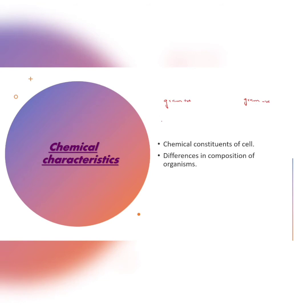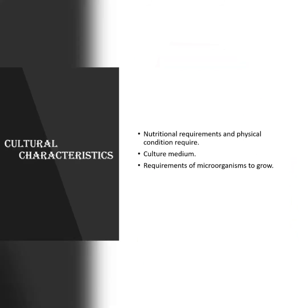For example, gram-positive and gram-negative organisms differ chemically. Gram-positive organisms have lipopolysaccharide in their cell wall, while gram-negative bacteria do not. Teichoic acid is present in gram-positive bacteria but absent in gram-negative bacteria. A major distinction among viruses is made on the basis of the type of nucleic acid they possess — either ribonucleic acid (RNA) or deoxyribonucleic acid (DNA).